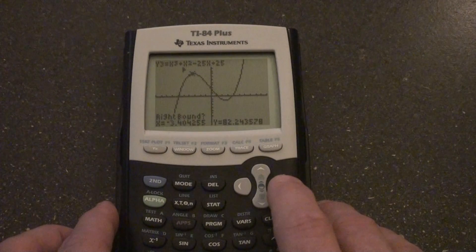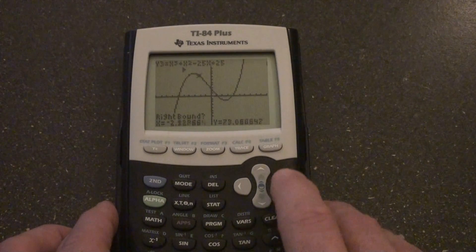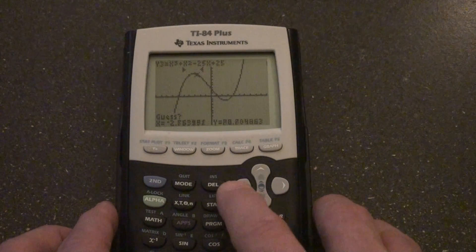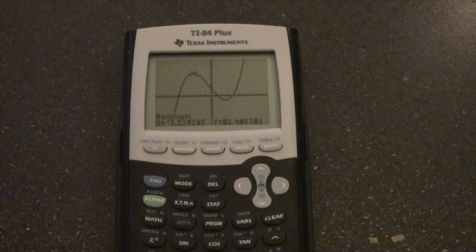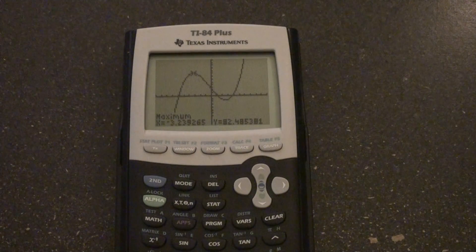So we're going to go to the left side of that maximum point and press enter. We're going to go to the right side of this maximum point and press enter, and then we're going to take a guess by scrolling back. There it is. And it's pretty easy. It gives us the maximum value.